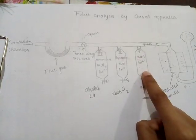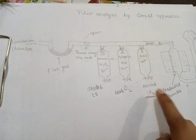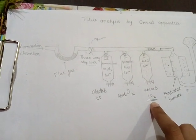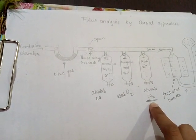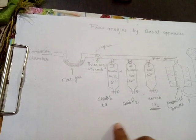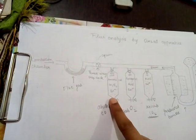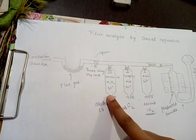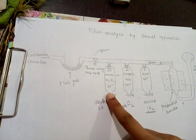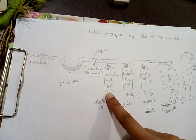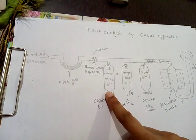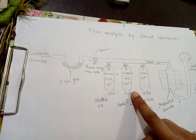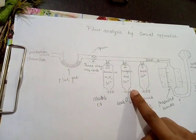Here, complete combustion occurs when the amount of CO2 is high in the absorbing bulb. If the amount of CO2 is high, incomplete combustion takes place and insufficient oxygen is supplied. If the amount of oxygen is high, a greater amount of oxygen has been supplied.